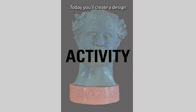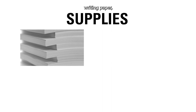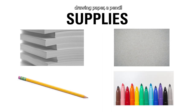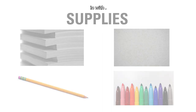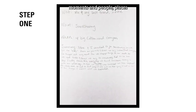Today, you'll create a design for an expressive artwork based on a story. For this activity, you'll need writing paper, drawing paper, a pencil, and something to color in with. First, think of an important memory about yourself or one that someone has told you about themselves. Write a summary of that memory down to recall the key moments and people, places, and things involved. Remember to include the beginning, middle, and end.